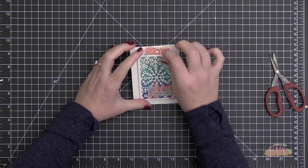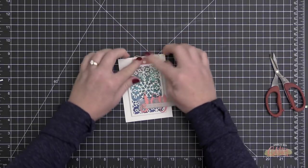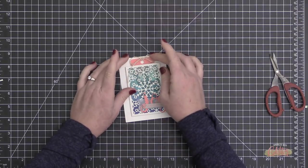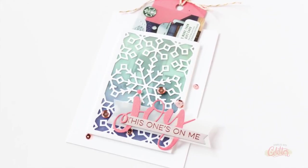Then I added a little twine to the topper on that gift card, and I'm going to slide that right into the pocket that I adhered onto this Neenah Solar White card base. This is actually a four-bar card base, so it measures four and seven-eighths by three and a half inches.